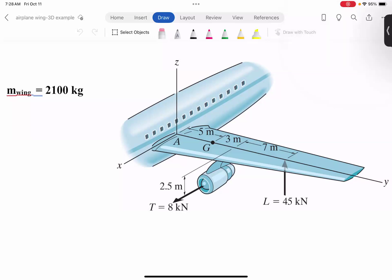So here you have the wing of this airplane attached to the fuselage and subjected to two forces plus, of course, the weight of it. So the lift force here is 45 kilonewtons, and this is the thrust force, so thrust and the lift.